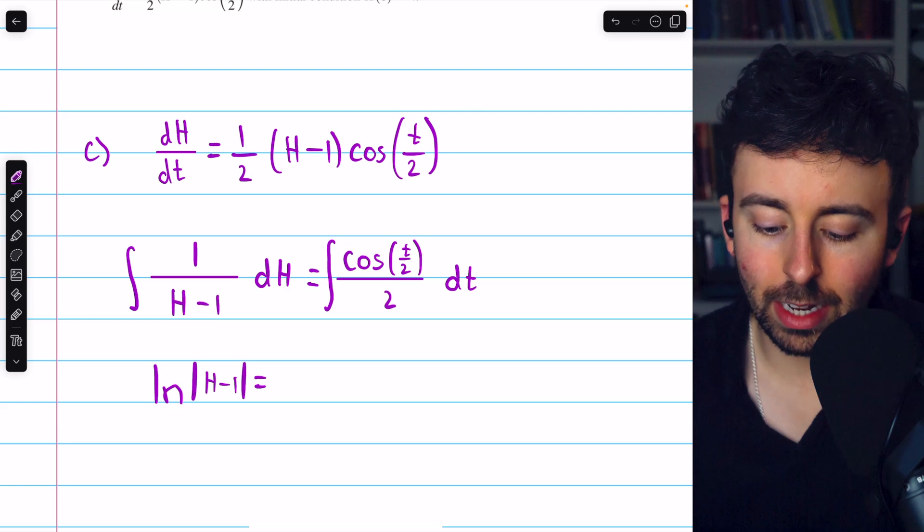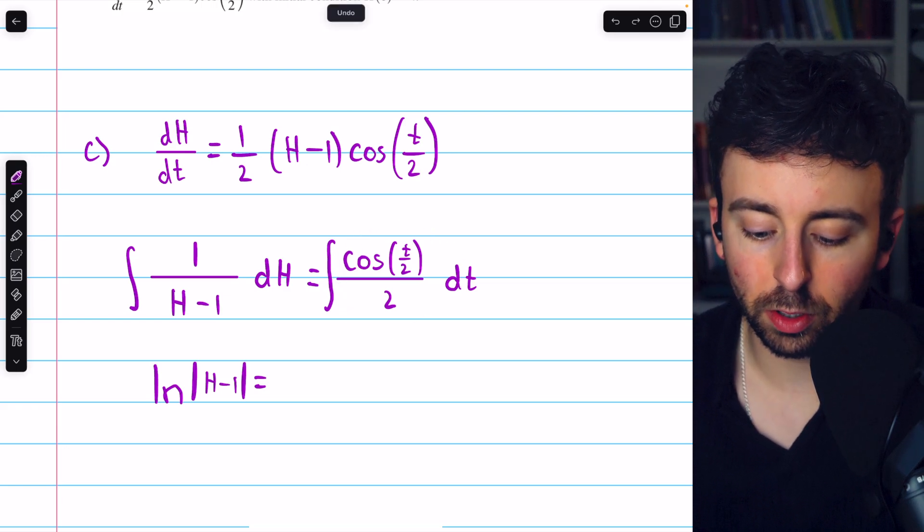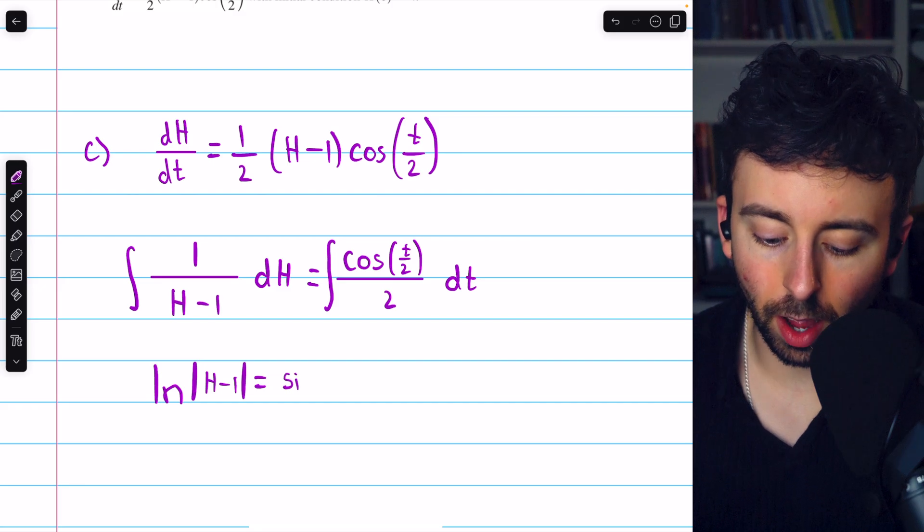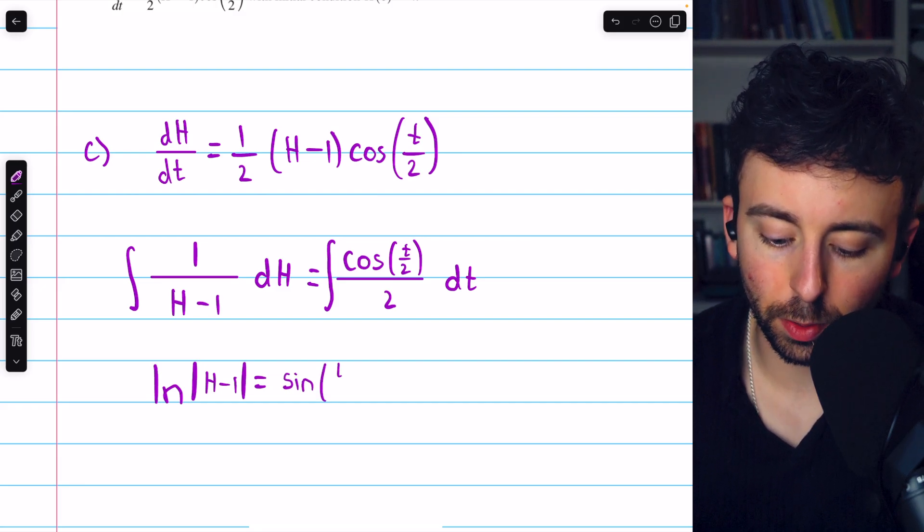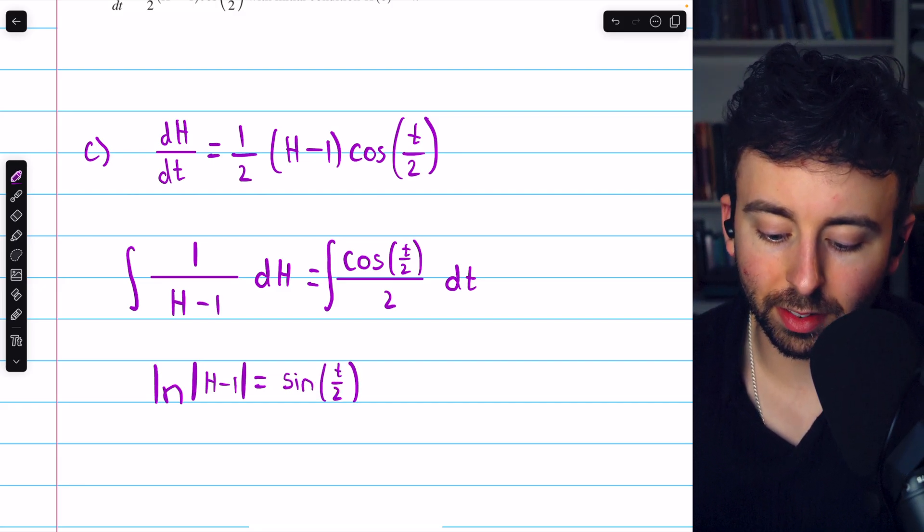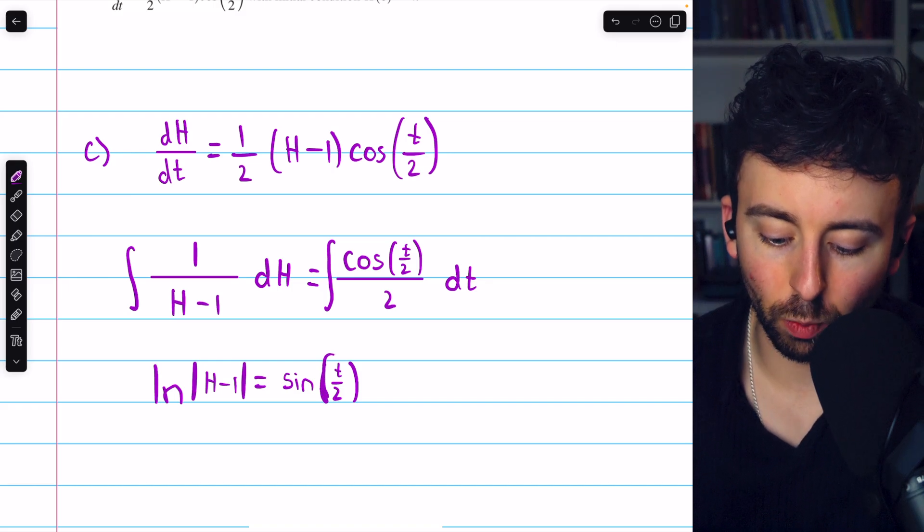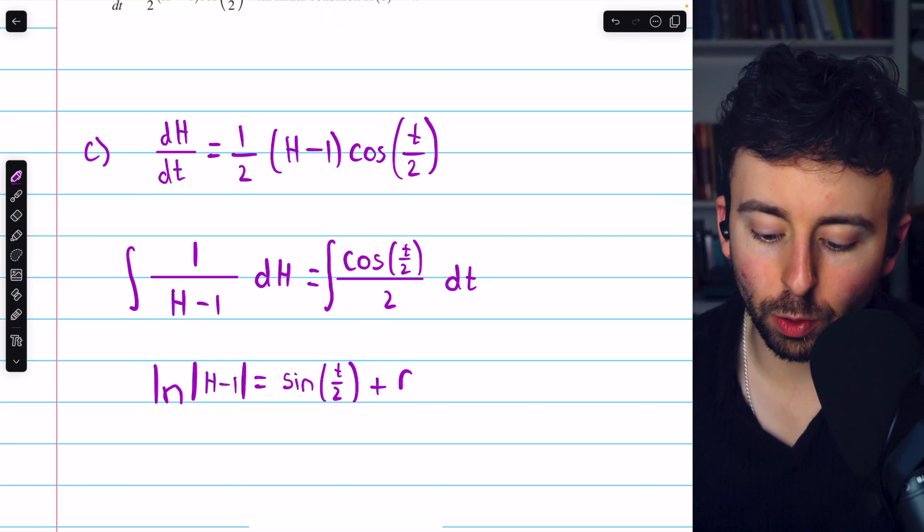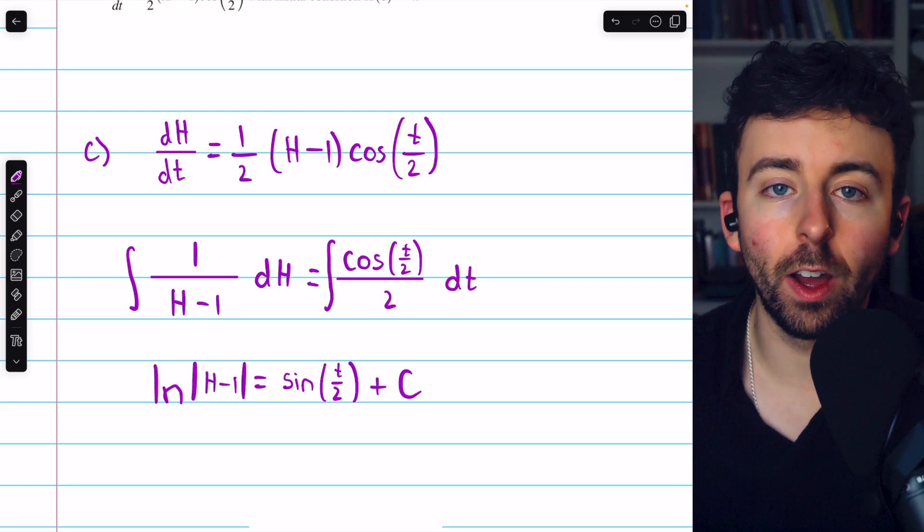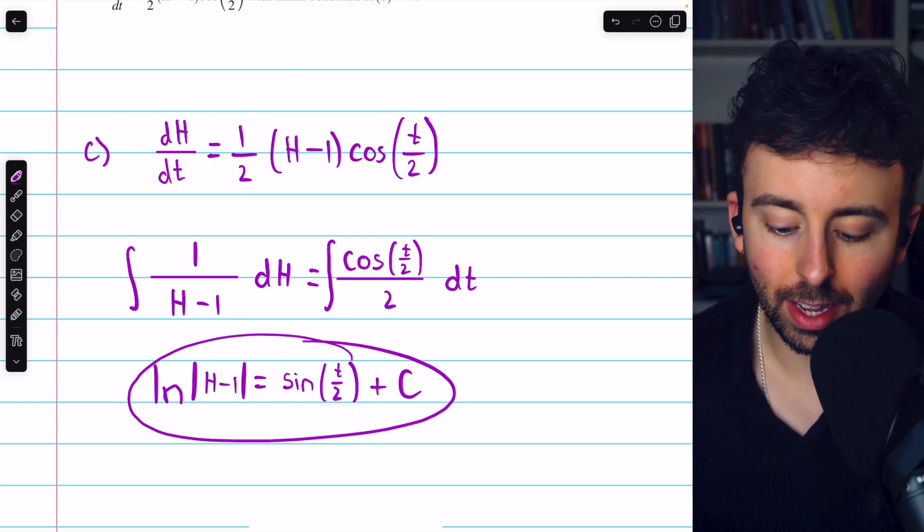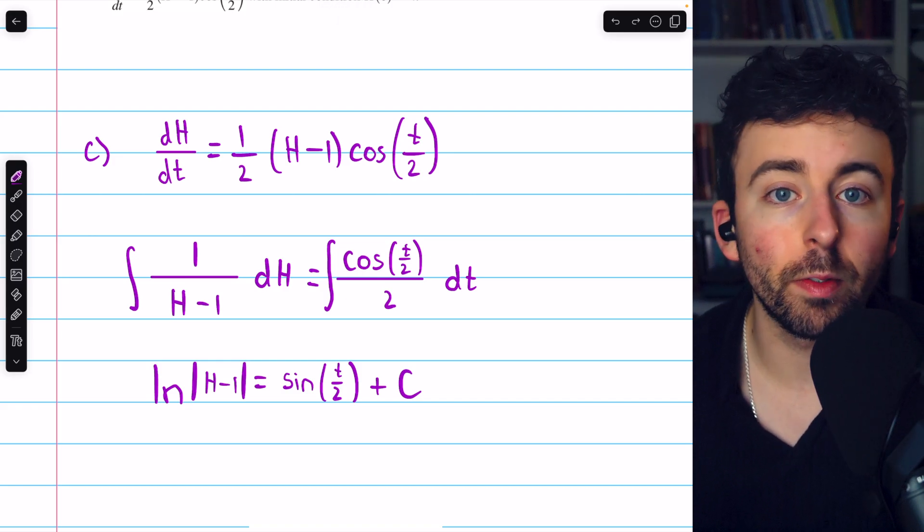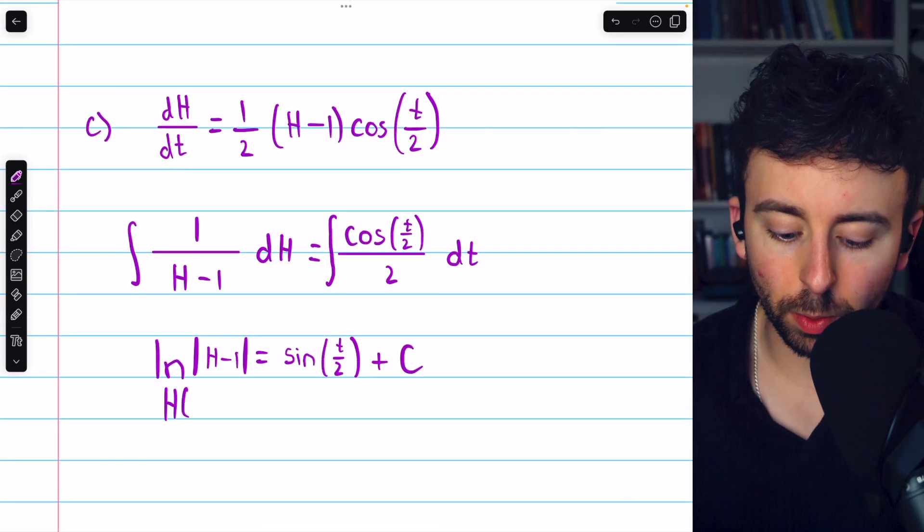And on the right, integrating cosine of (t/2) over two, we're going to have sine of (t/2). If we took the derivative of this, the chain rule would give us that one half that we have here. And then let's imagine that we gathered all the arbitrary constants on the right. Now, we can go ahead and use our initial condition to solve for c.